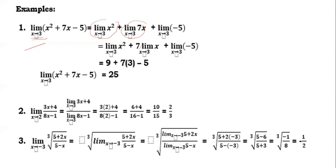Applying the theorems: substitute 3 into x, so three times three gives 9; seven times 3 gives 21; and the limit of the constant negative 5 is just negative 5. So we have 9 plus 21 minus 5, which equals 25. Therefore, the limit of x² plus 7x minus 5 as x approaches 3 is equal to 25.